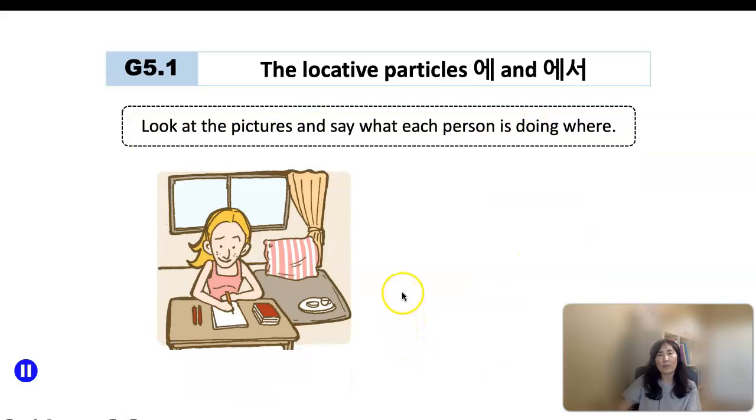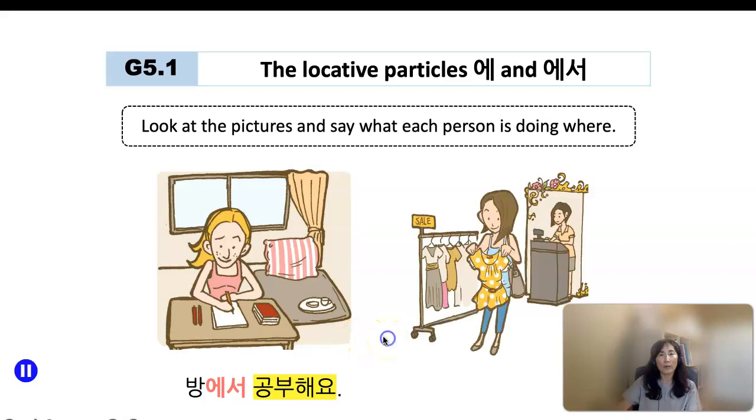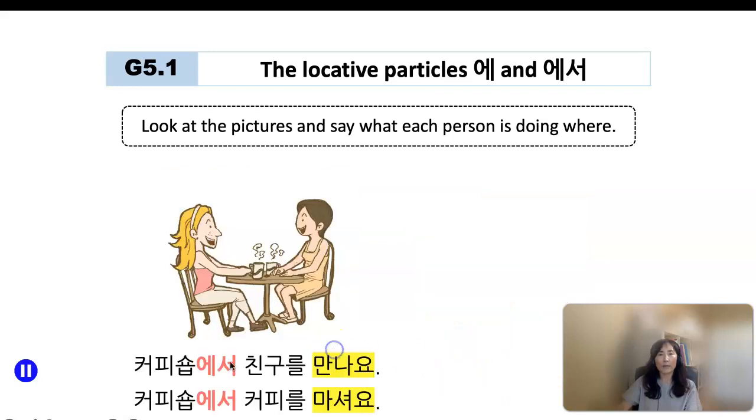Look at the pictures and say what each person is doing and where. She is studying at her room. 방에서 공부해요. 백화점에서 쇼핑해요. She is shopping where? At the department store. 백화점에서 쇼핑해요. 커피숍에서 친구를 만나요. 커피숍에서 커피를 마셔요. So meet someone or drink something. These are all physical activity verbs. And then those kinds of activities take place in a certain location. 에서 is attached to that location. 커피숍에서.